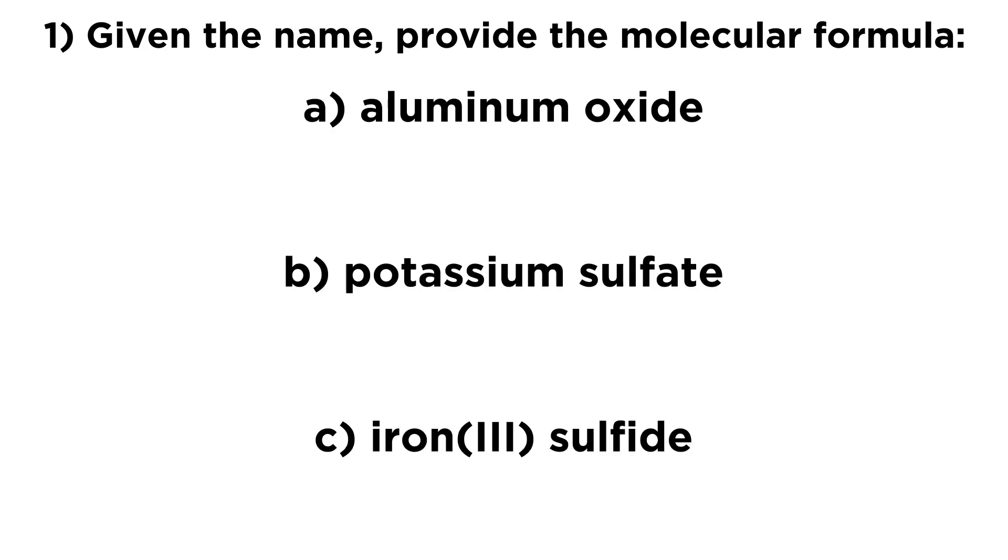So let's take these first three where we're given the name. Now let's try aluminum oxide. So we know these are ionic compounds, so what we have to do is figure out exactly what ions these are. So if we have an aluminum ion, what is going to be the charge on that ion? What is the common charge for aluminum?